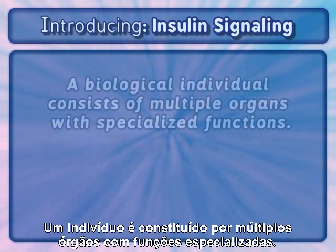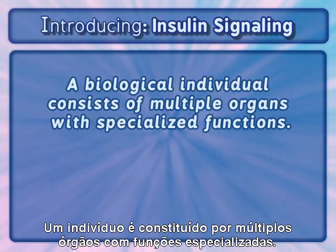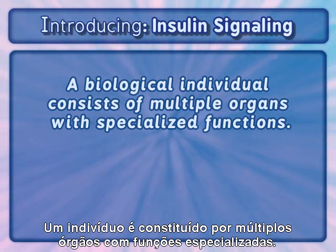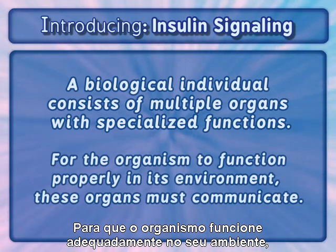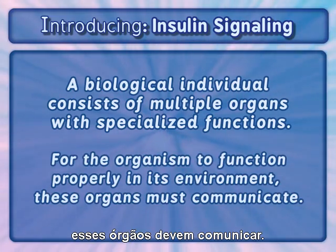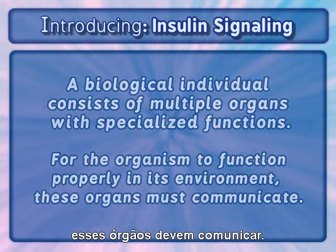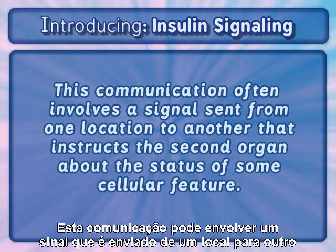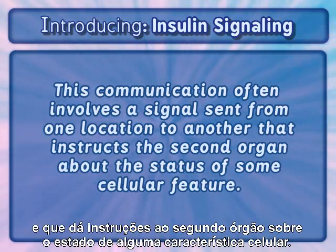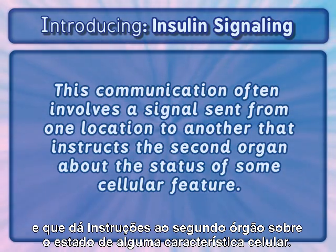A biological individual consists of multiple organs with specialized functions. For the organism to function properly in its environment, these organs must communicate. This communication often involves a signal sent from one location to another that instructs the second organ about the status of some cellular feature.